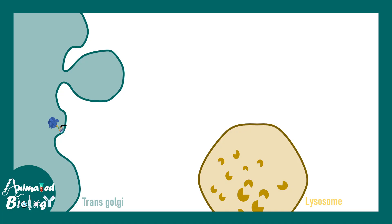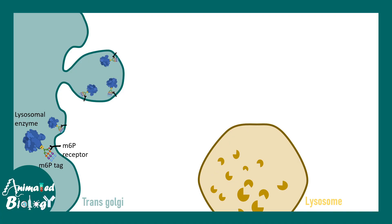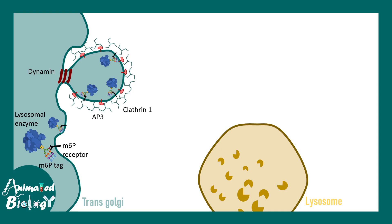Looking at the trans-Golgi and the lysosome: at the trans-Golgi, the lysosomal enzyme carries the M6P tag. Specific receptors known as mannose-6-phosphate receptors bind to this tag. These receptors and the protein interact with each other, and specific adapter complexes bind to them. For lysosomal-bound vesicles, AP3 and clathrin association occurs. A clathrin coat assembles on top of these vesicles, forming a classical clathrin-coated vesicle that will carry the lysosomal enzymes to the lysosome.